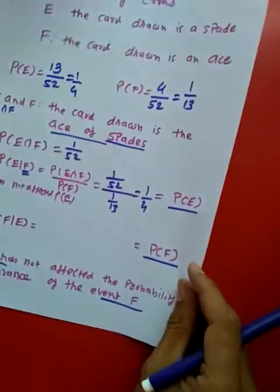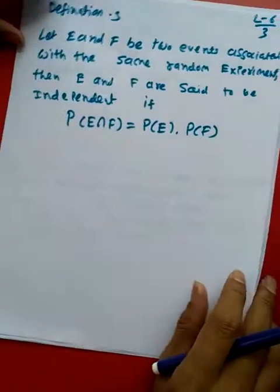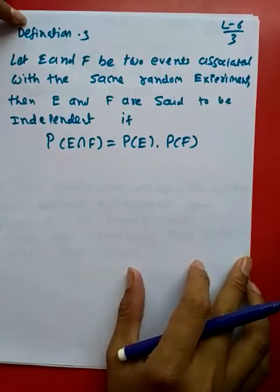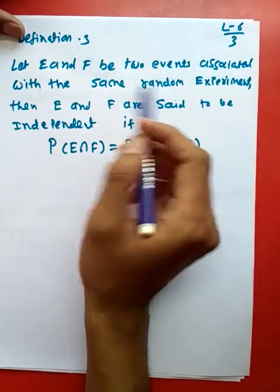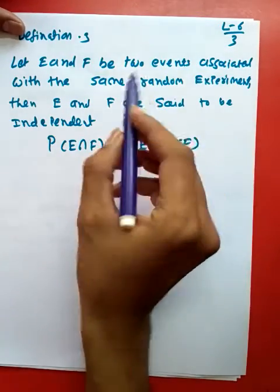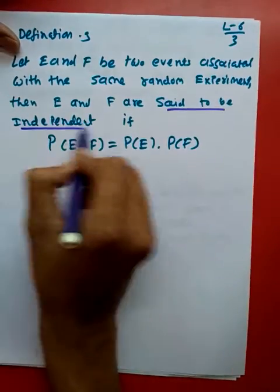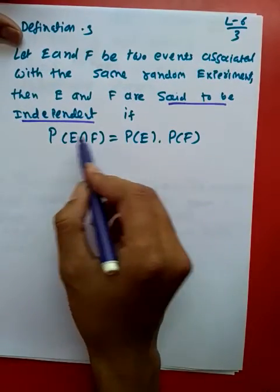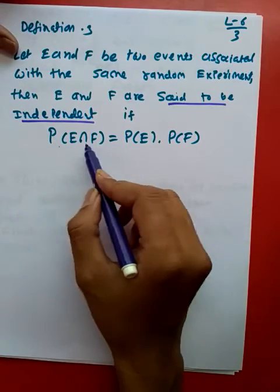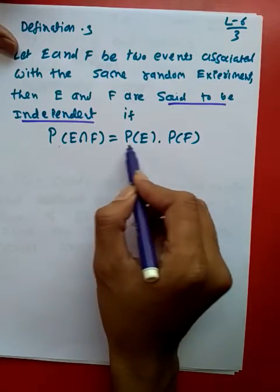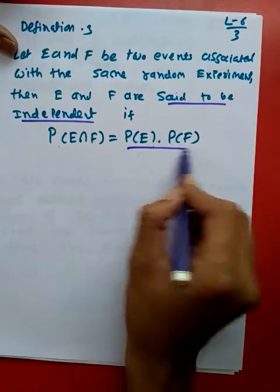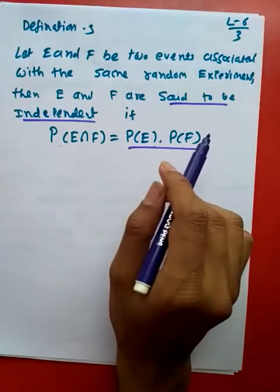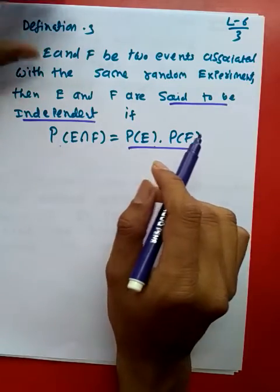Now we can write it in our definition: E and F are two events of a random experiment, and we can say they are independent when P(E∩F) equals P(E) multiplied with P(F). Then we can say that they are independent events.